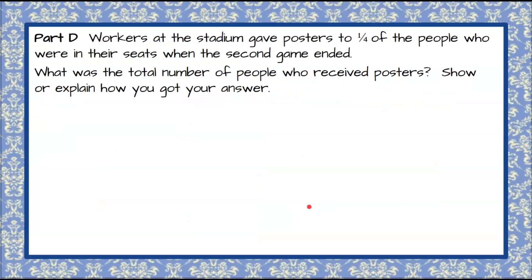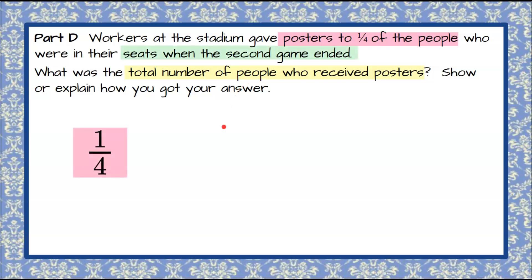Moving on to Part D. Workers at the stadium gave posters to one-fourth of the people who were in their seats when the second game ended. What was the total number of people who received posters? Show or explain how you get your answer. Go ahead and pause. Welcome back. So we're finding the total number of people who received posters. It was given to one-fourth of the people in their seats at the end of the game. We know from Part C that there were 2,000 people in their seats at the end of the second game.